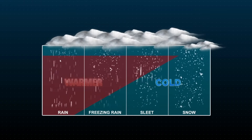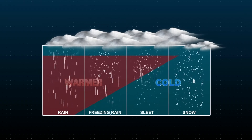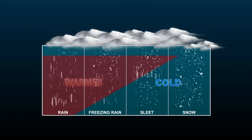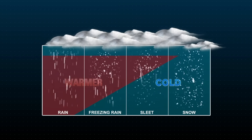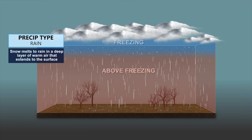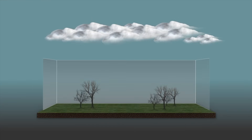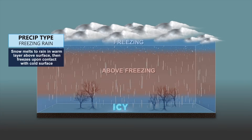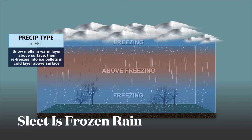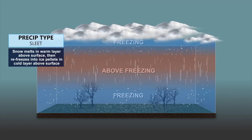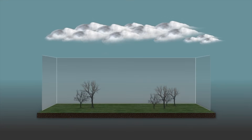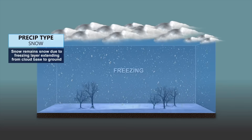So those are the four precipitation types. When it's warm enough all the way through the layer, it's rain. When it's cold near the ground but warmer above us, it could be snow melting into rain and then freezes on contact, and then the sleet and the snow, as you can see there. Very interesting scenario. So rain is going to fall way south of Kansas City. There may be a little bit of rain in Kansas City, then there may be some freezing rain, and there could be some sleet. Sleet is frozen rain — snow melts in a warm layer above the surface, then refreezes into ice pellets, and it can turn white on the ground. And then you have snow.